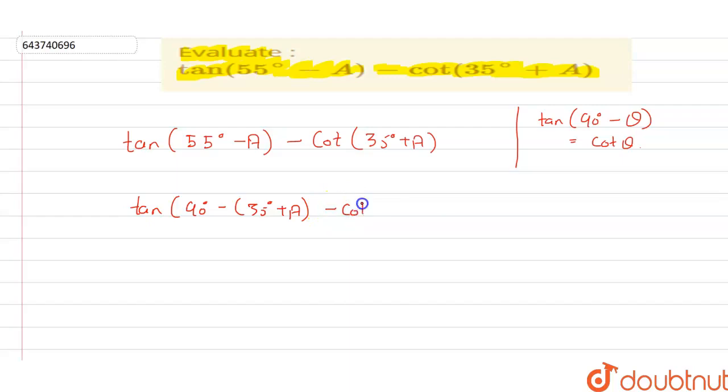minus cot of 35° plus A. See, 90 minus 35 is equal to 55 and minus A is also there, so no change in the degree. And if we change that complementary angle, see, 90 minus θ is equal to cot(θ). So we